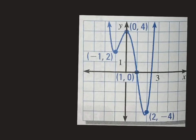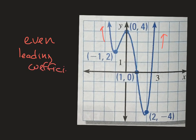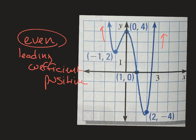Looking at a graph, they're going to ask you: would the leading coefficient be even or odd, and positive or negative? Because both ends are going up, I know for a fact that the degree is even. And because they're both going up, that tells me the leading coefficient would be positive. If they're both going down, the leading coefficient would be negative. So they'll ask you two things: is it even or odd, and is it positive or negative?